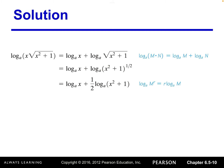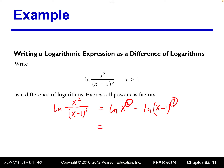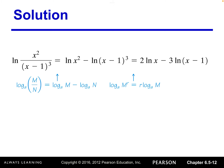Let's try another one: ln of x squared divided by (x minus 1) to the third power. Since we have division, we can write the difference: ln(x squared) minus ln of (x minus 1) to the third power. Then we express the powers as factors: that becomes 2·ln(x) minus 3·ln(x minus 1) in parentheses. Note that (x minus 1) in parentheses cannot be further broken into two different logs.